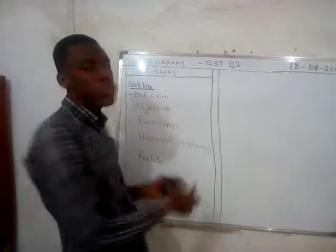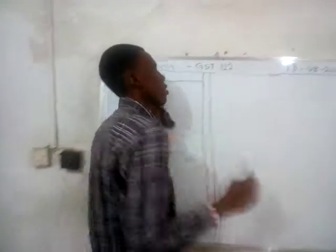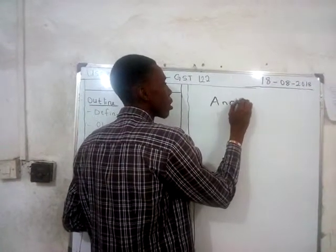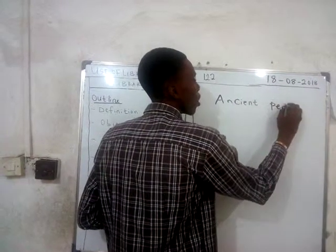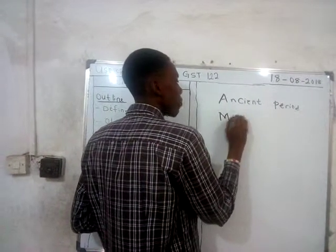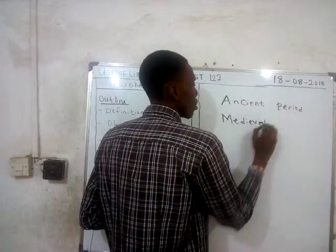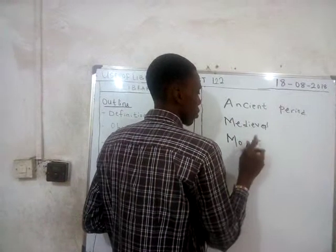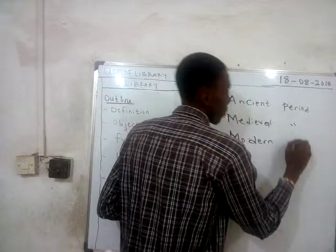Welcome back. The historical development of the library can be divided into three phases: the first phase is the ancient period, the second phase is the medieval period, and the third phase is the modern period.